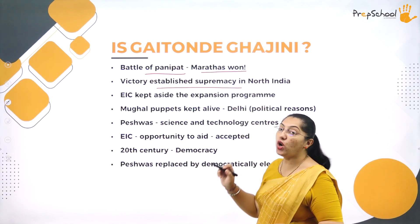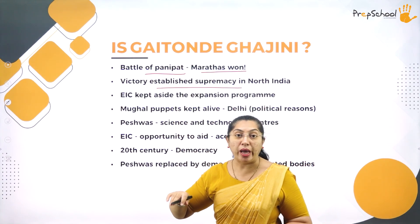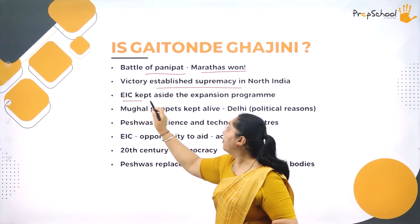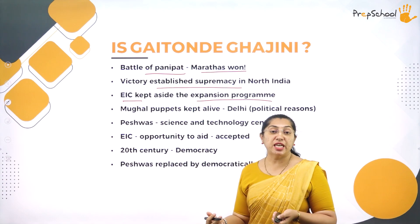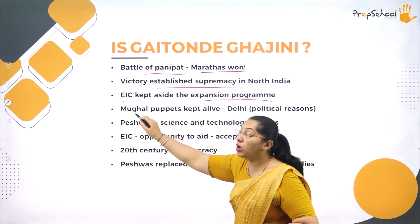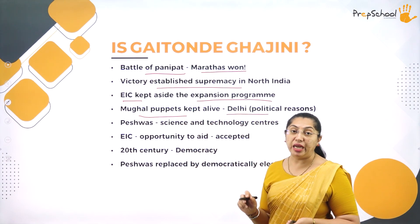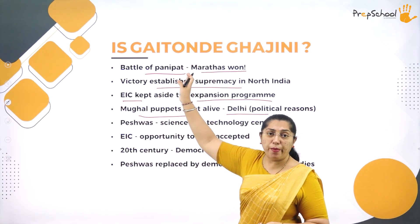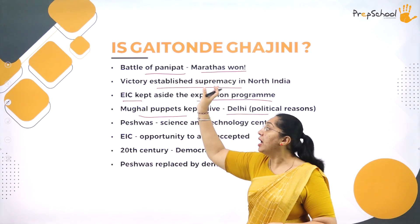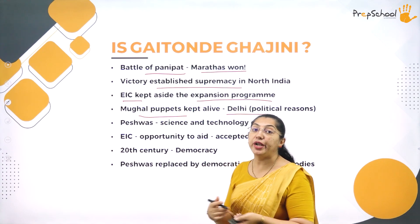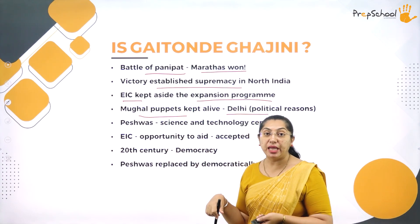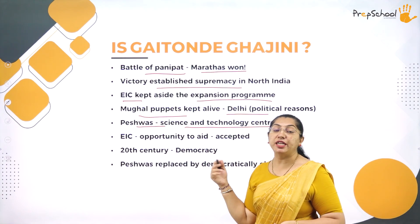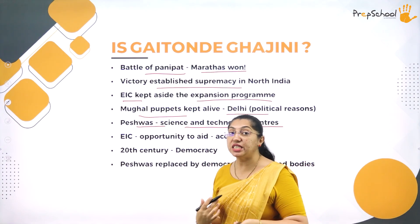He reads that the Marathas' victory established their supremacy in North India, and as a result, the East India Company set aside its expansion program. The Mughals became puppets under the hands of Delhi. The Peshwas thought that science and technology were their centers. All this he could read in the books — and when he starts reading the fifth volume, history changes.